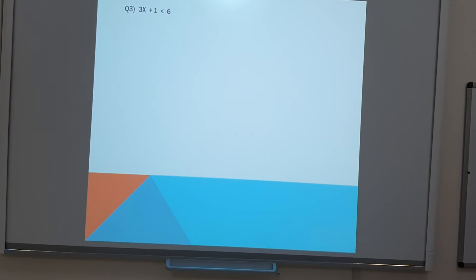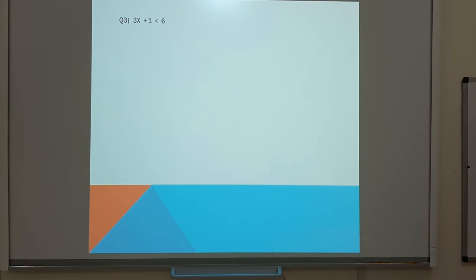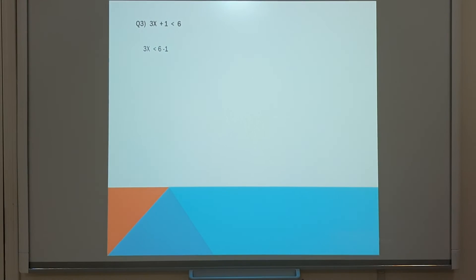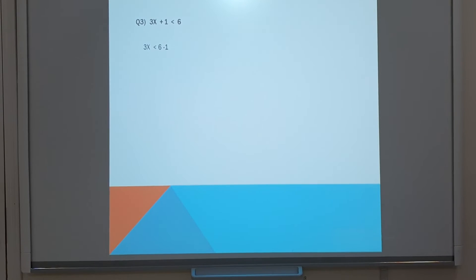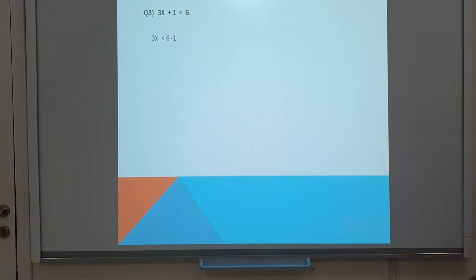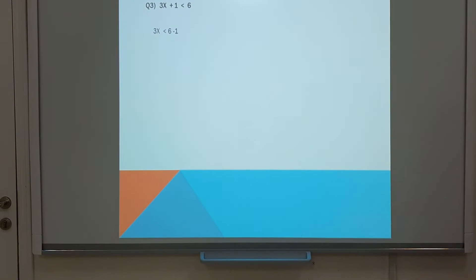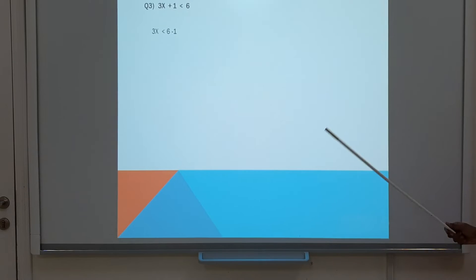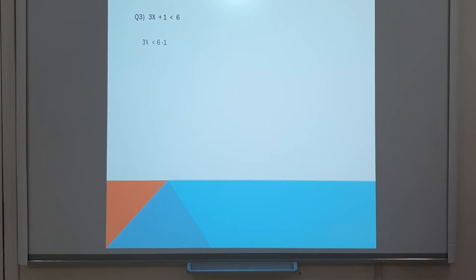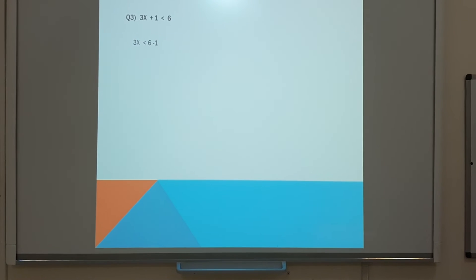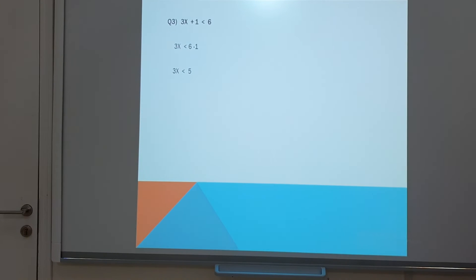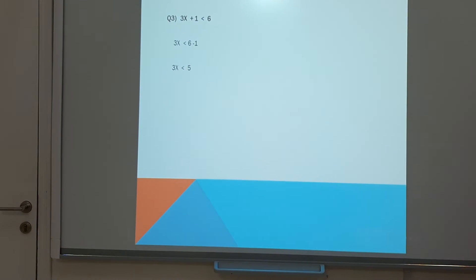Question 12: 3x plus 1 is less than 6. Keep the variable on the left side and bring the numbers to the right-hand side. It's not that the variable must always be on the left — it's just for convenience to keep variables on one side and numbers on the other side. So 3x is less than 6 minus 1, which is 5. So 3x is less than 5.